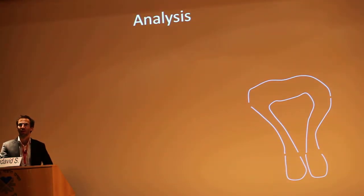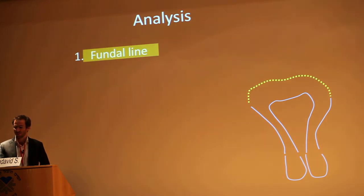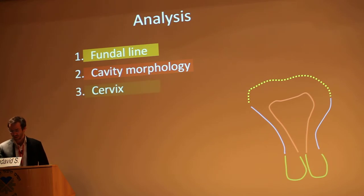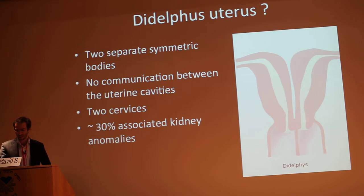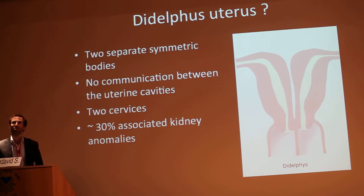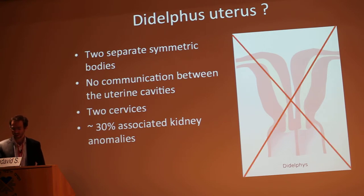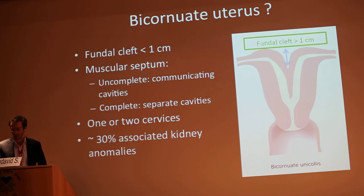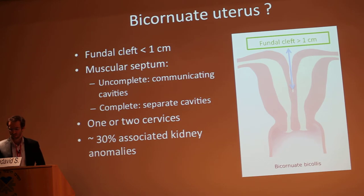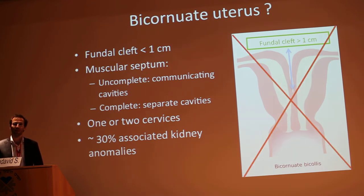We now have to make a choice between the didelphys uterus, bicornuate, or septate. There are four criteria to analyze: the morphology of the fundal contour, the morphology of the cavity, the morphology of the cervical region, and the presence or not of a kidney anomaly. In a didelphys uterus, there are two separate symmetric bodies with no communication between the uterine cavities, two cervices, and 30% associated kidney anomalies — so we can rule it out. Bicornuate is defined by a fundal cleft over one centimeter in length, by a muscular septum that can be either incomplete with communicating cavities or complete with separate cavities, by one or two cervices in the more complete forms, and 30% associated kidney anomalies. In this case, there was no fundal cleft, so we can rule out the bicornuate uterus.